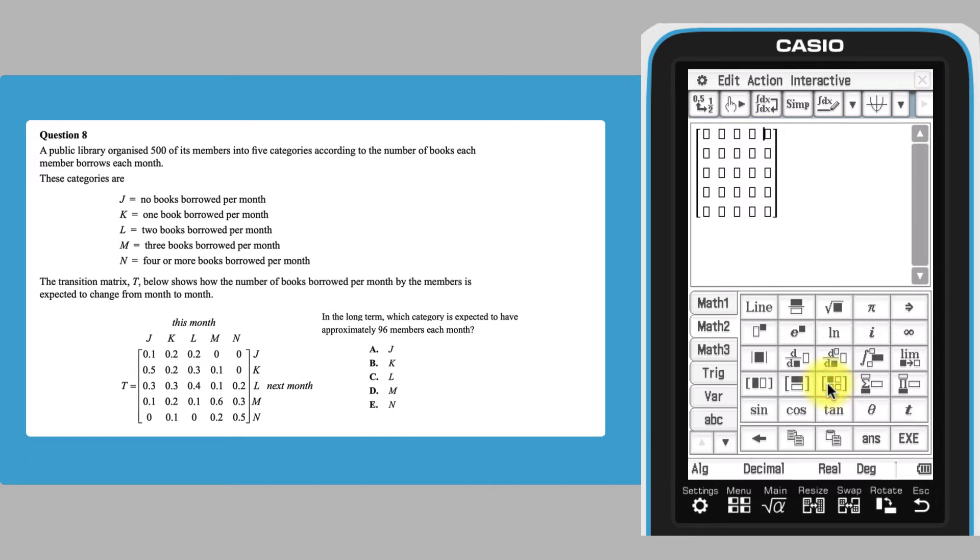Enter the elements of the transition matrix using the arrow keys to navigate from element to element. The zeros before the decimal point can be omitted to speed up entry.